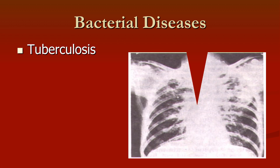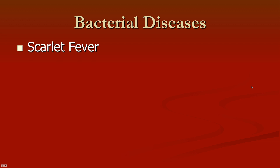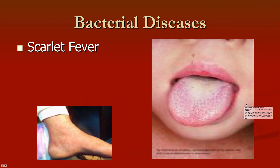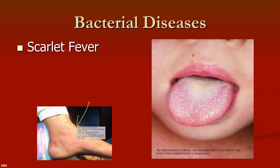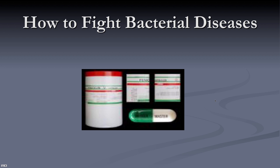Tuberculosis is a lung disease that used to kill lots of people — it was even mentioned in the Bible, so it's very ancient — but unfortunately it has made a return. Scarlet fever is a type of strep where you get a red rash, sometimes on your tongue. Other bacterial diseases include meningitis, which you hear about in outbreaks at colleges, and food poisoning.